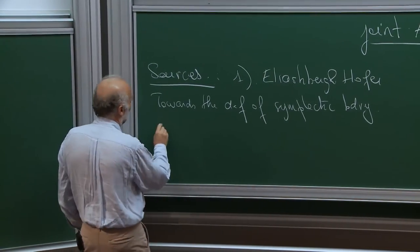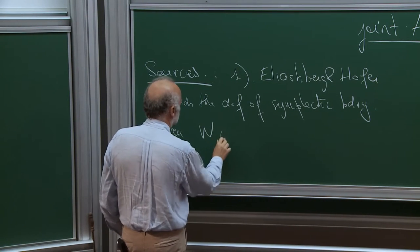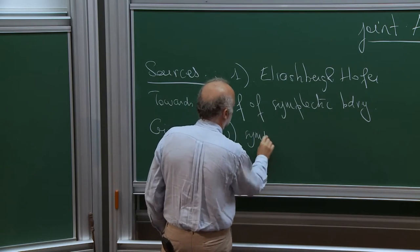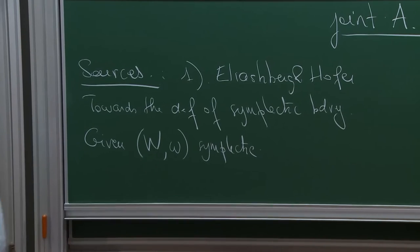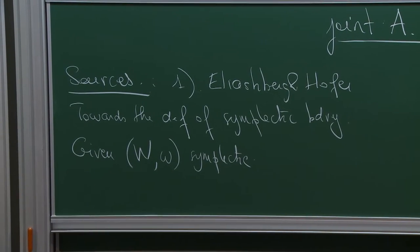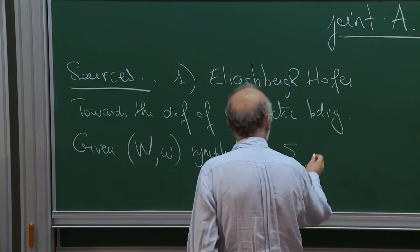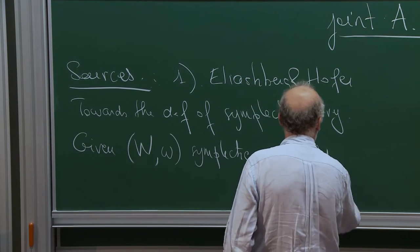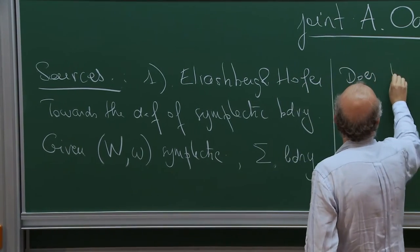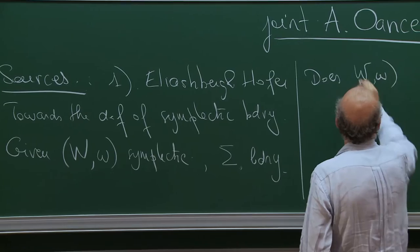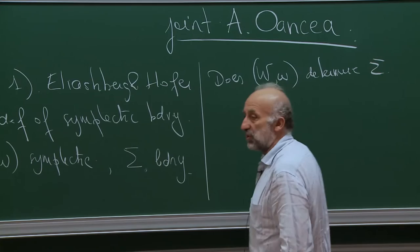If you're given a symplectic manifold — I will be more specific on the assumptions — where the symplectic manifold will be open but such that it has a boundary, the question is: does W omega determine sigma?